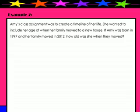Sample number two is a word problem, so it's a little bit trickier. But as long as we know the steps for solving a problem, we'll be just fine. It says: Amy's class assignment was to create a timeline of her life. She wanted to include her age when her family moved to a new house. If Amy was born in 1997 and her family moved in 2012, how old was she when they moved? We'll underline it so it sticks out for us.